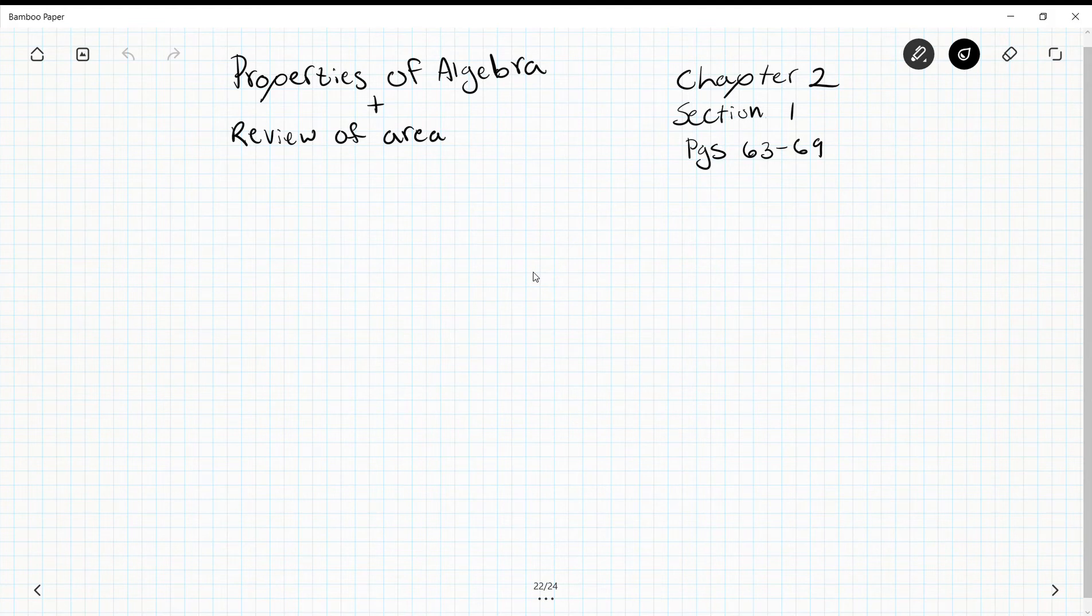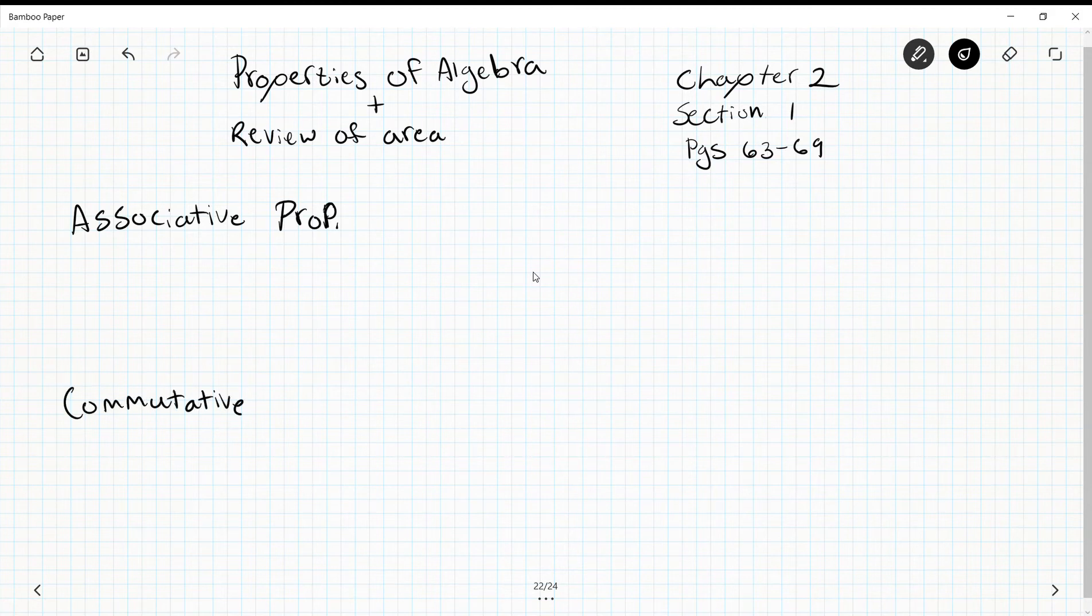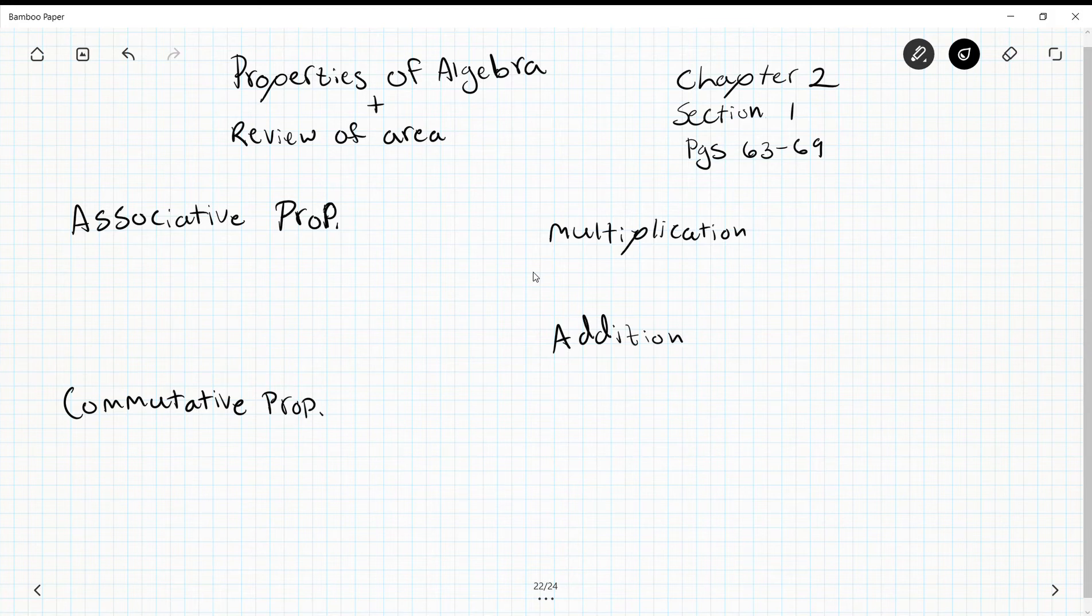Two of the major properties of algebra are the associative property—I'm going to shorten property to prop—and the commutative property. I'd like to point out that these work for multiplication and addition. They do not work for division and subtraction, just because order matters with those two.